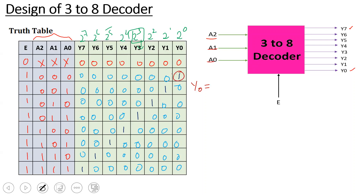Now deriving the Boolean expressions from the truth table. For Y0, the corresponding input combination including enable is: E=1, A2=0, A1=0, A0=0. So Y0 = E · A2_bar · A1_bar · A0_bar.